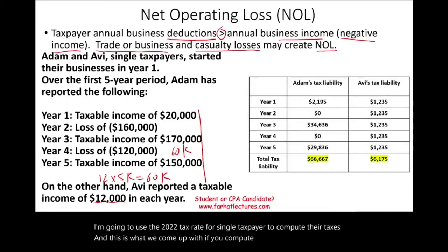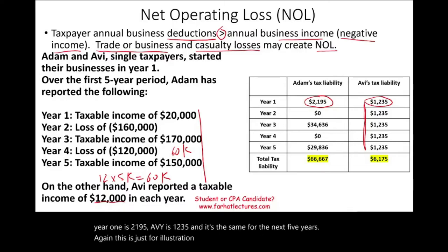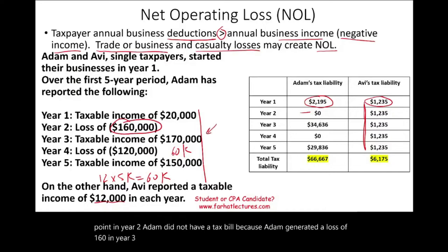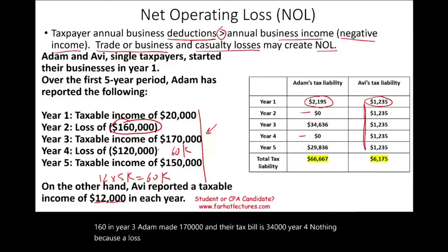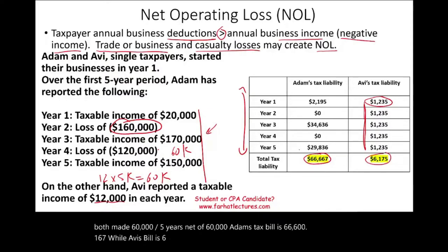Adam's tax bill in year one is $2,195; Avi's is $1,235, and Avi pays the same each year. In year two, Adam had no tax bill because he generated a loss of $160,000. In year three, Adam made $170,000 and his tax bill is $34,000. Year four, nothing because of a $120,000 loss. Year five, $29,000. So they both made $60,000 net over five years, yet Adam's total tax bill is $66,667 while Avi's is just $6,175 over five years.